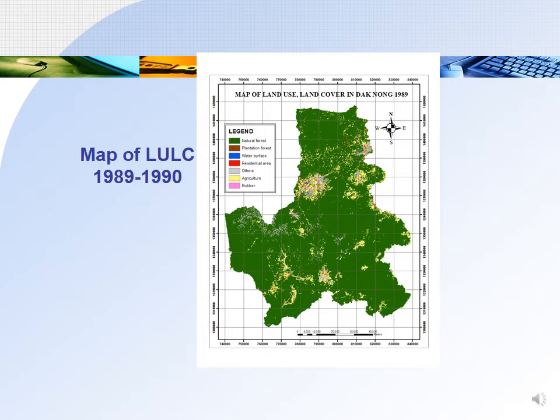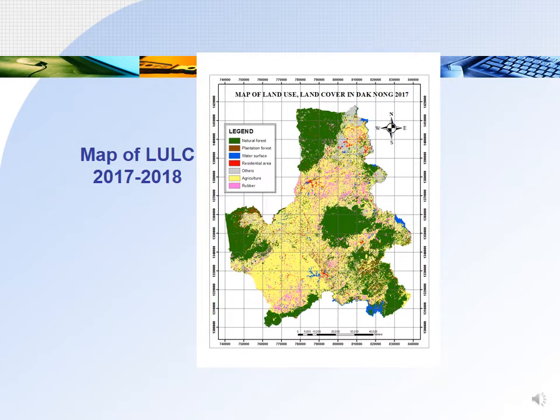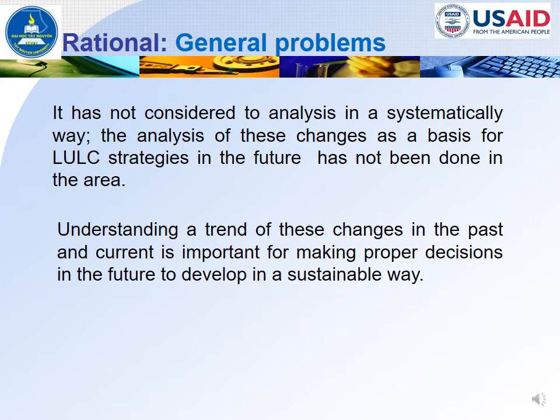So although natural forests in Vietnam including Dagnum are among the most diverse tropical forests in the world, they are being lost at an alarming rate. You can see this is the map of LUMC 30 years ago, from 1989 and 1990. The green color represents natural forests in this period, accounting for more than 80% of the natural land in this area. But by 2017 and 2018, a lot of the green areas have disappeared. This has not been analyzed in a systematic way, and understanding the trend of these changes is important for making proper decisions for sustainable development in the future.